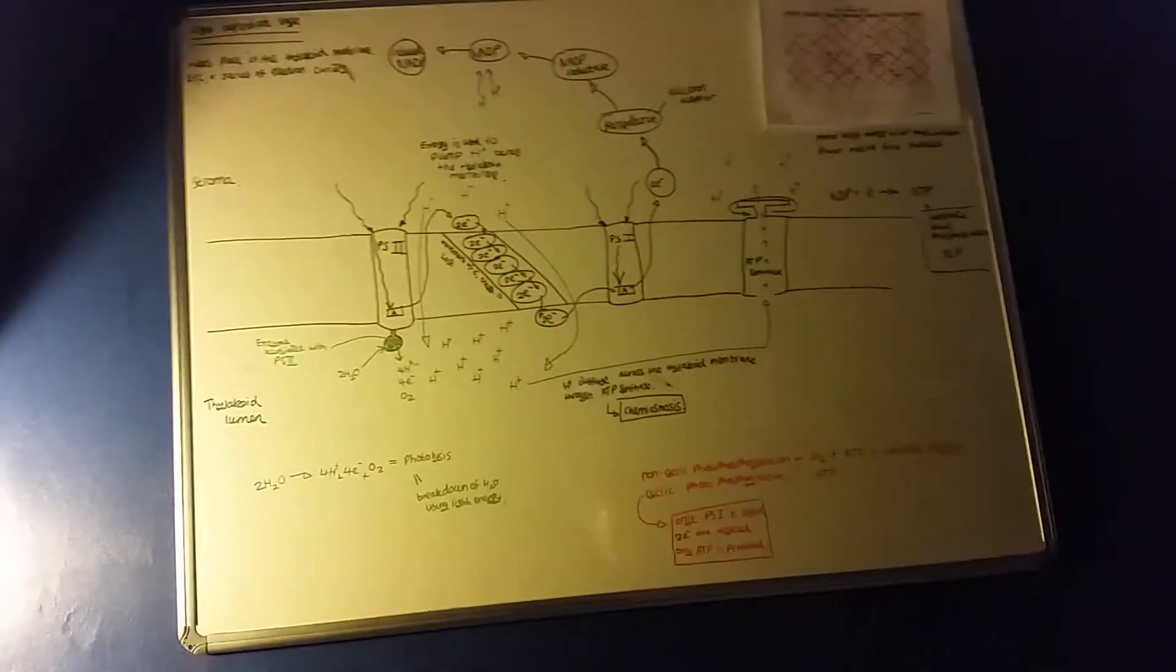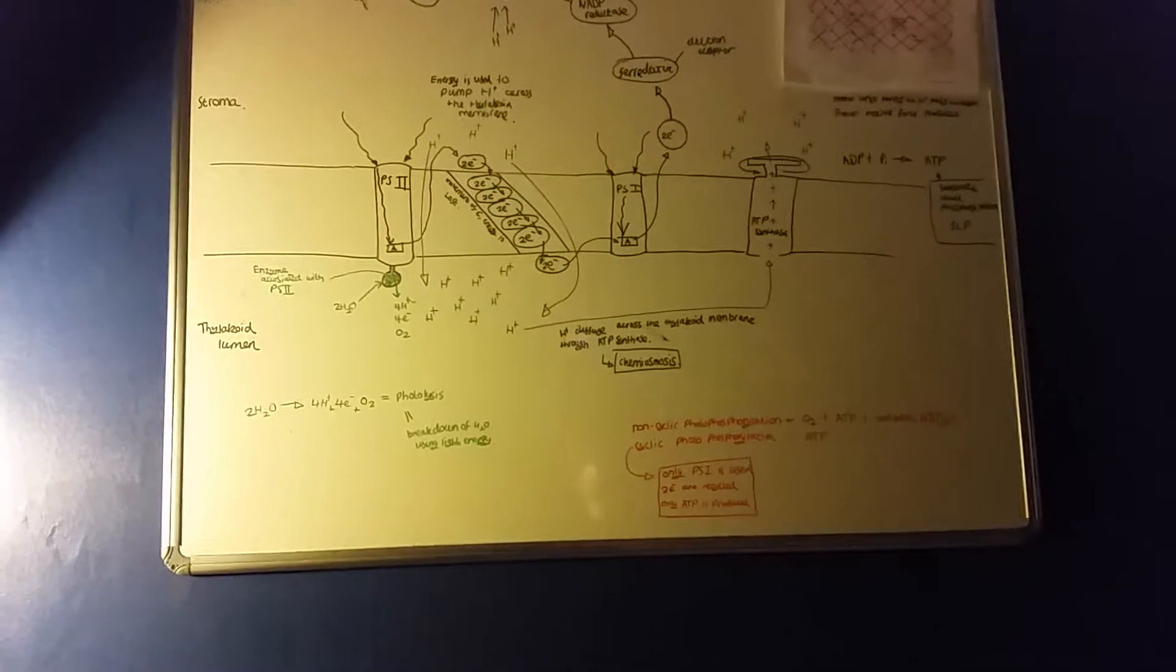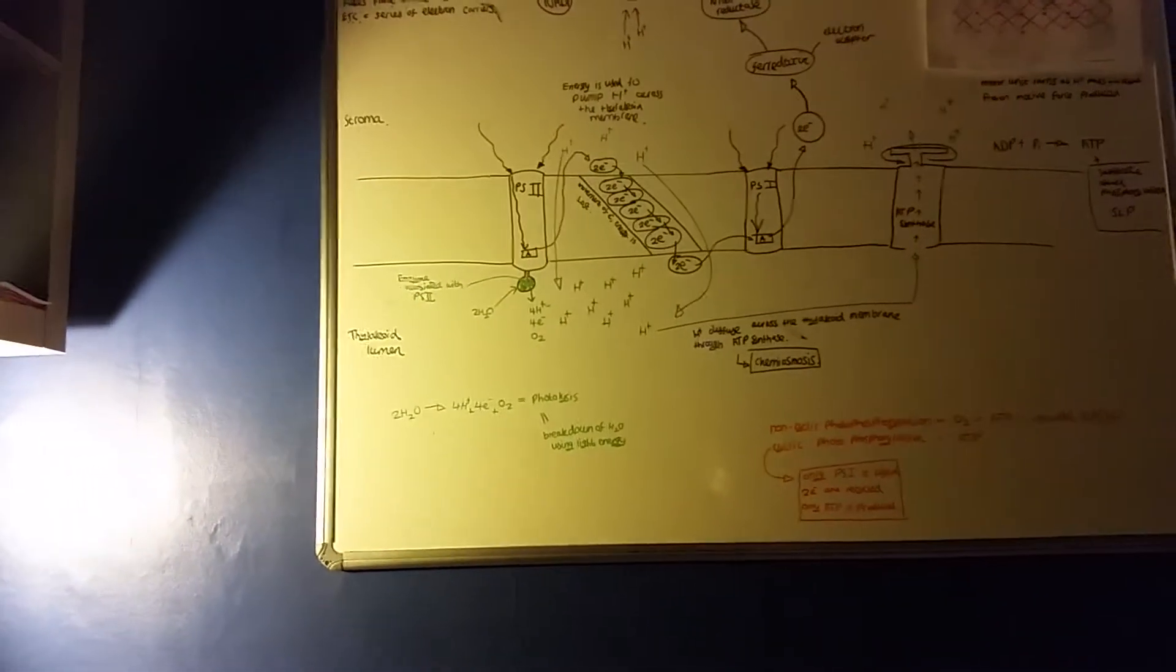This is the light-dependent stage of photosynthesis. This takes place in the thylakoid membrane. I'll start from here.